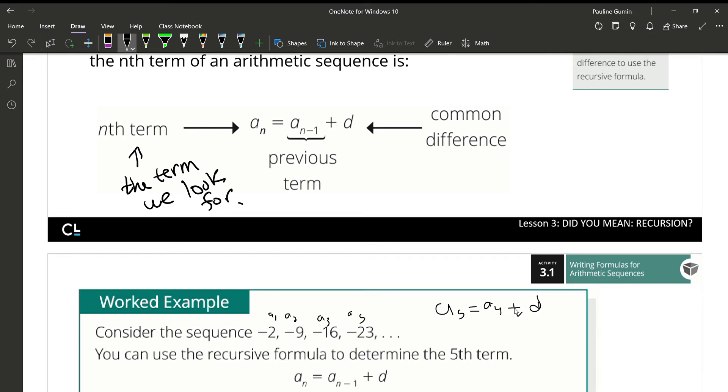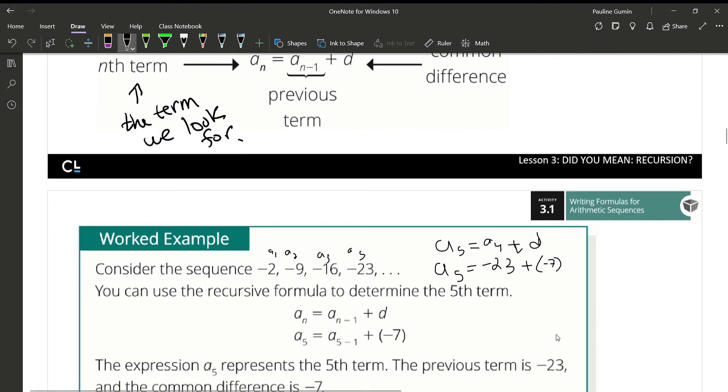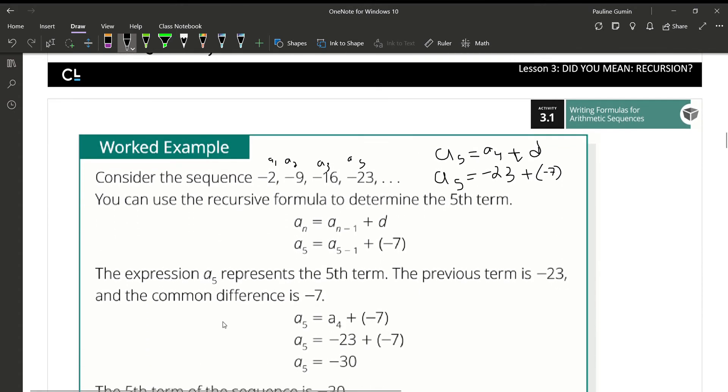Well, the fourth term in this case is negative 23. The difference, to get from negative 2 to negative 9 is subtracting 7, so I add our common difference, which is minus 7. And I believe that's what we have worked out here. Yes, beautiful. Negative 23 plus our negative 7 gives negative 30 for our fifth term of the sequence.